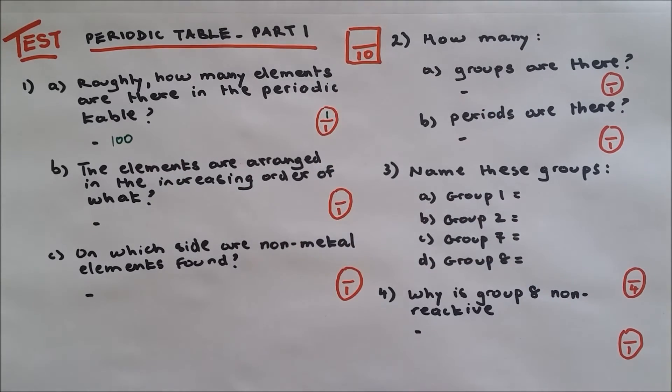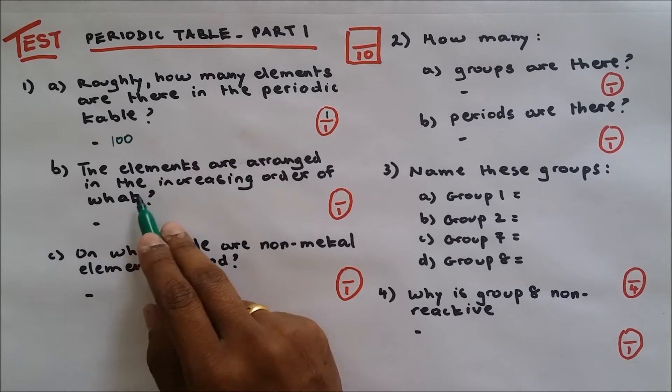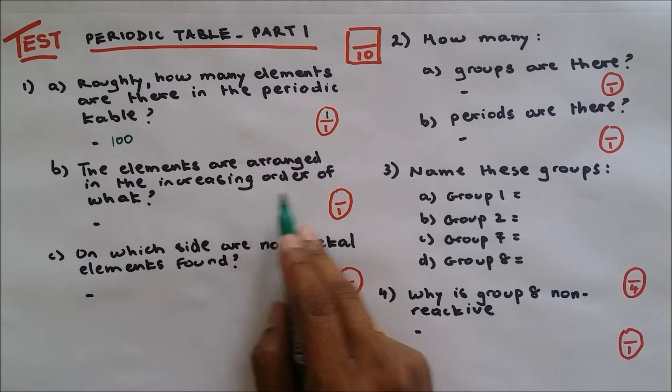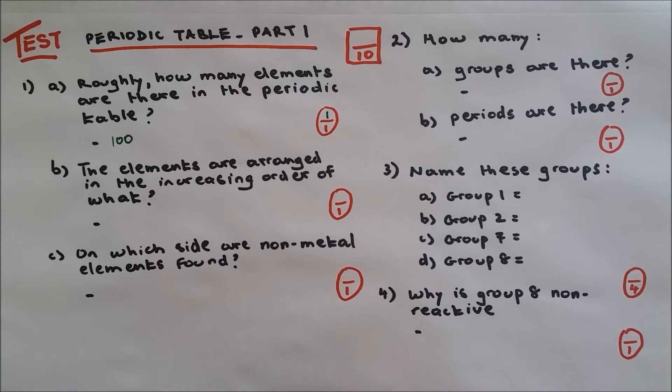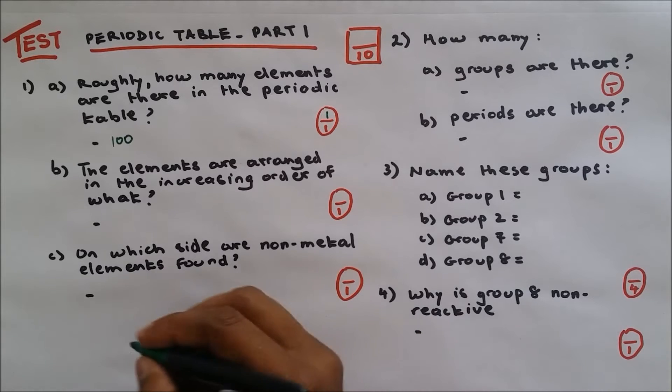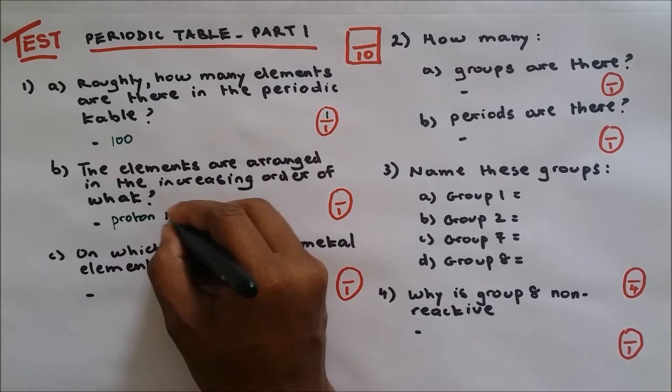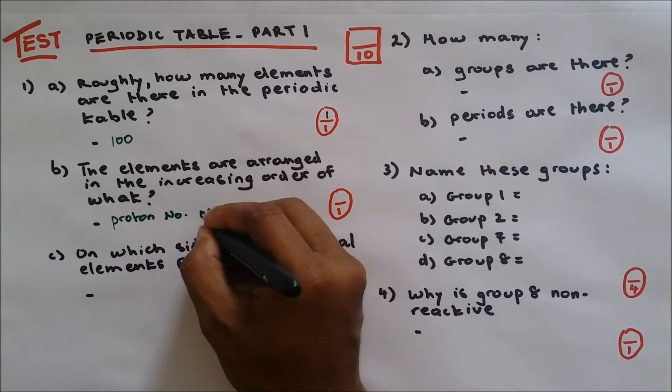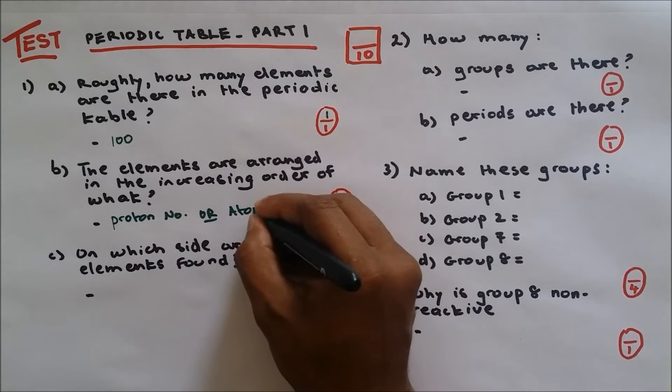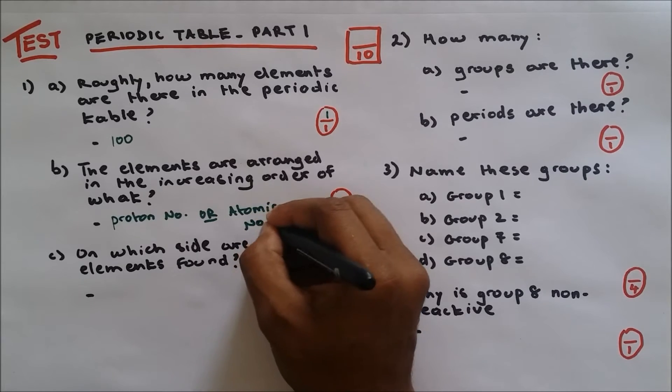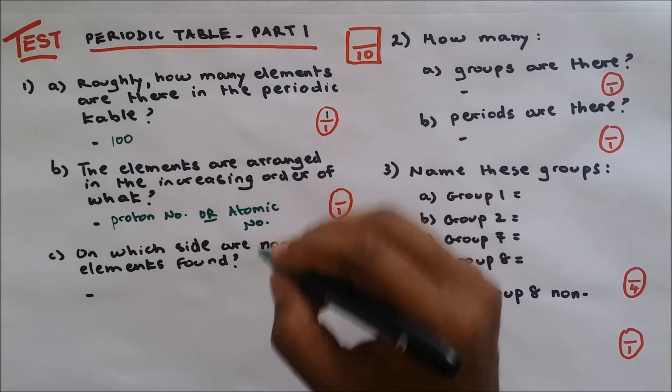Part B of the question: the elements are arranged in the increasing order of what? The elements are arranged in the increasing order of proton number, or you could say atomic number. Okay, well done, one out of one.